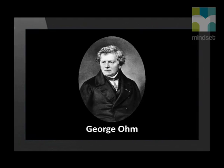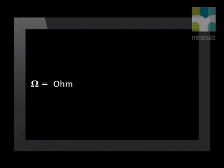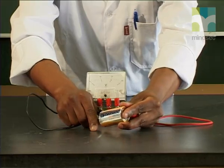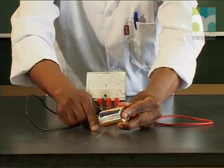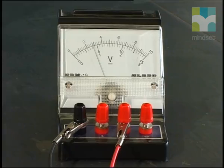The last component of the circuit that we need to discuss is resistance. Resistance is anything that causes opposition to the flow of electrical charge around a circuit. The higher the resistance of a conductor, the harder it is for the electrical charges to push through. George Ohm was the first person to investigate resistance within electric circuits, and for this reason we use the ohm as the measure of resistance. The Greek letter omega is used as the symbol for the ohm.